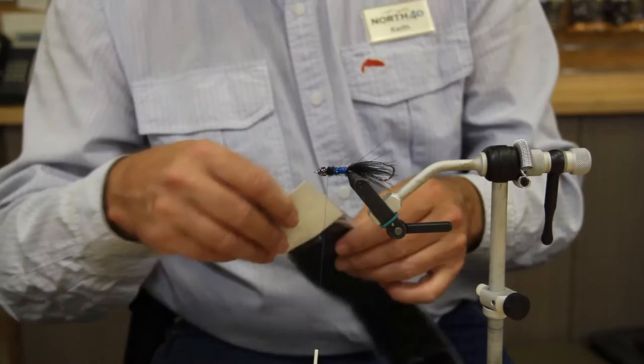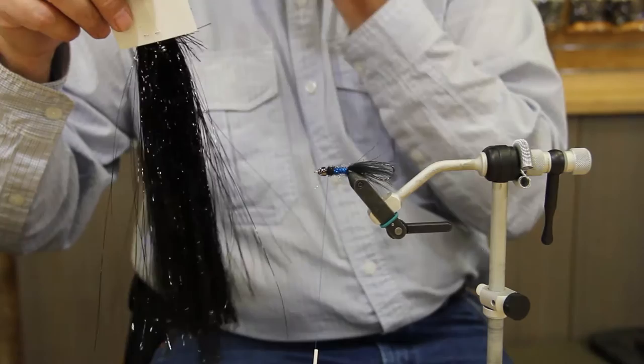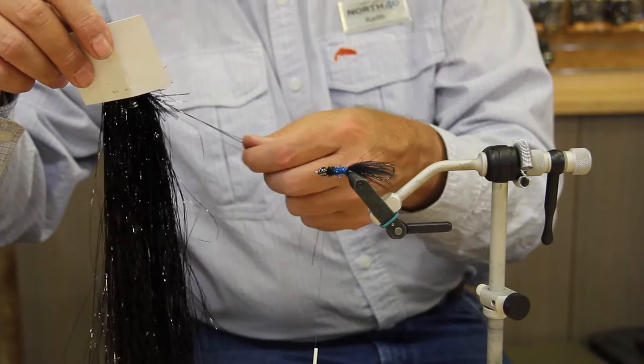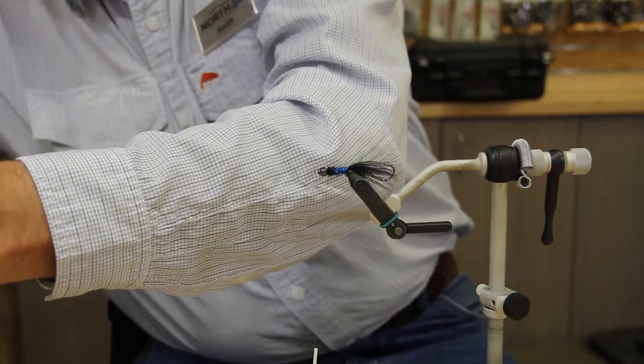Next we're going to do is take our black flash-a-boo. If you notice this stuff gets static electricity real easy. So I might have to wet it down a little bit. And you're only going to want about four, maybe five fibers, not too many. About four is about actually what you want to do, depending on how big a fly you're tying.